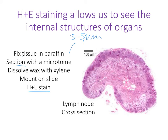When you do these sorts of protocols you get sections that look a little bit like this. This one, for example, is a lymph node in cross section, and we can see various aspects of internal structure — this part is staining a bit darker than this part, there are internal structures, and some parts aren't stained at all.